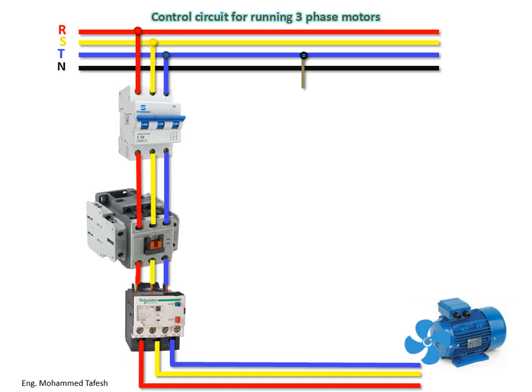Having shown the power circuit, we now move to the control circuit. The control circuit consists of a single phase and neutral only. We take a point from any of the phases because the goal of the control circuit is to send an electrical signal to control components such as contactors. Through the contacts, the power circuit is turned on or off as needed. A fuse or small circuit breaker for the control circuit — rated at 6 amperes or 10 amperes — is used because the loads of the control circuit are magnetic coils of contactors, signal lamps, and measurement indicators.